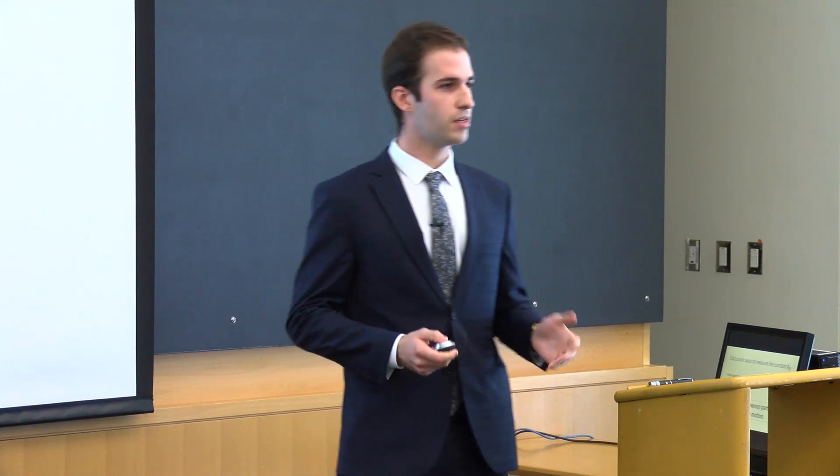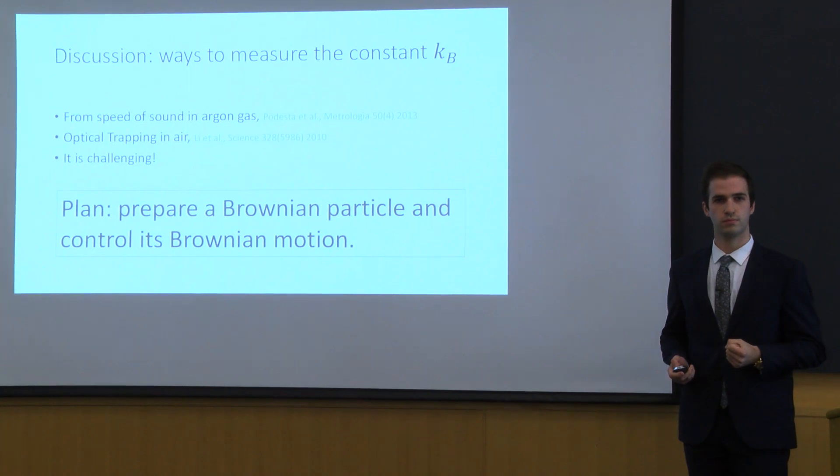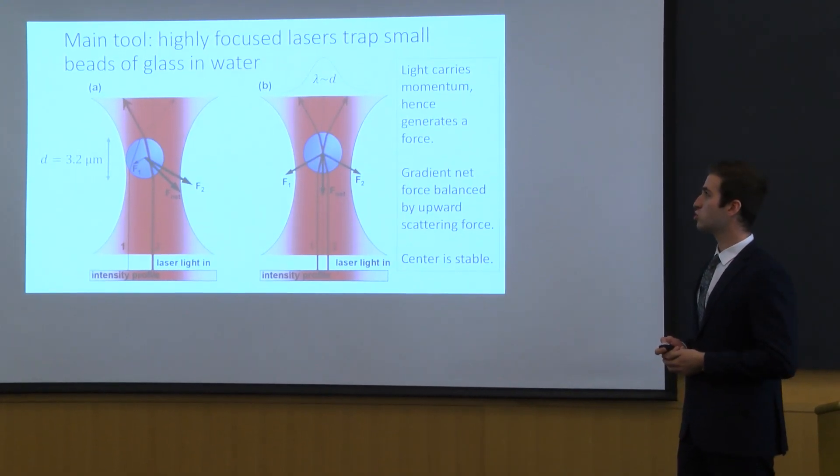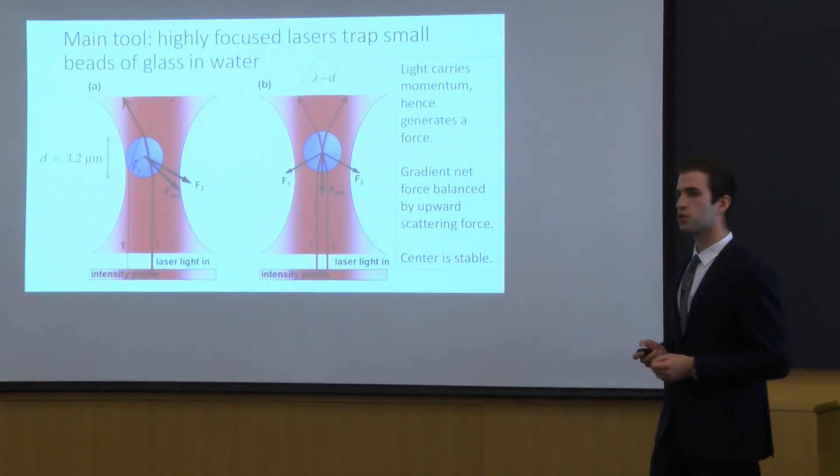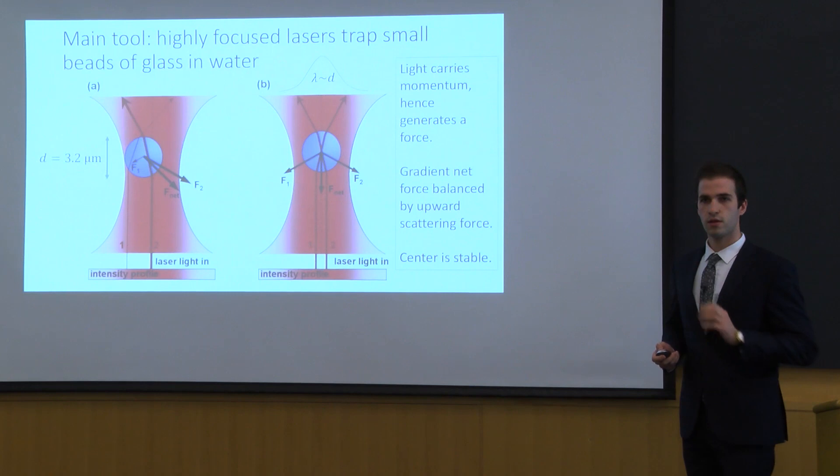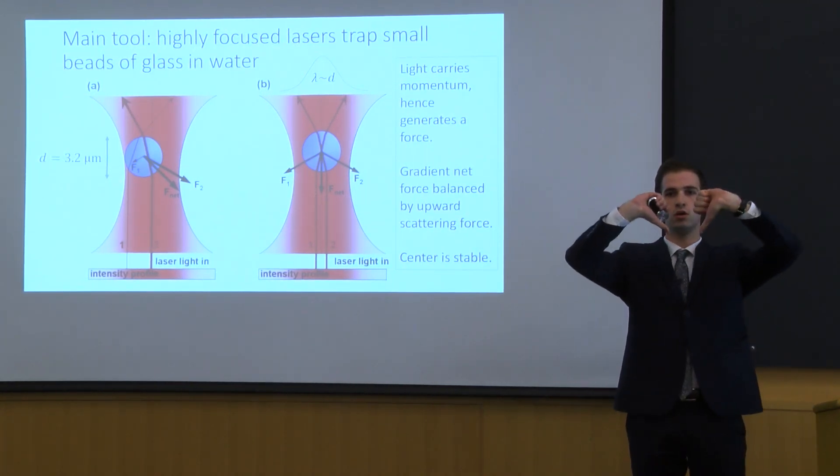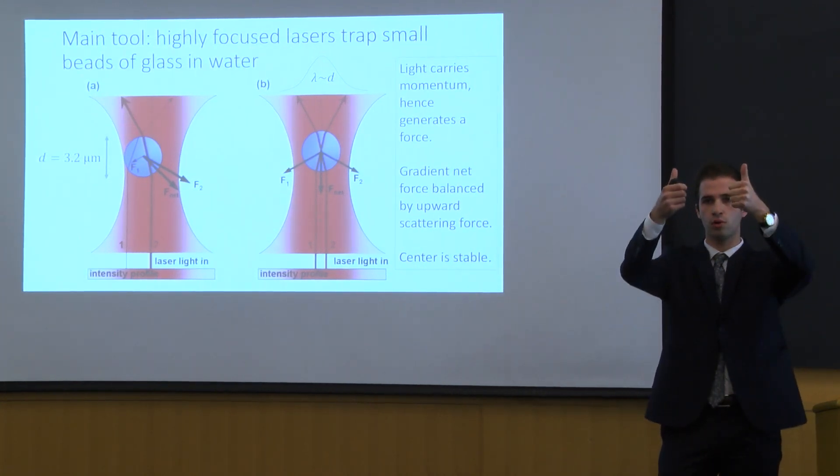Our plan is to prepare Brownian particles and control their Brownian motion. We take glass beads of spherical glass beads of diameter of 3.2 microns and the main tool is to concentrate a highly focused laser on top of these beads. There's interesting physics going on. Light carries momentum, thus it generates force. We have that the net gradient force opposes the motion of the beam while the net scattering force goes along the motion of the beam.